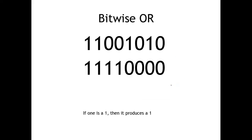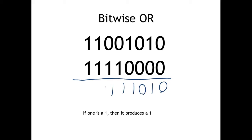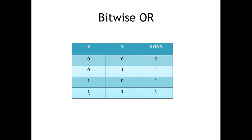For bitwise OR, if one input is a one, it produces a one — just like a logical OR in an if statement. If one or the other is true, then the overall condition is true. Only one value needs to be a one for the result to be a one. The truth table shows this is almost the exact opposite of AND: the only time we get a zero is when both values are zero; otherwise, the result is a one.